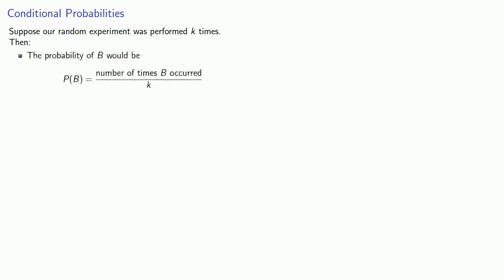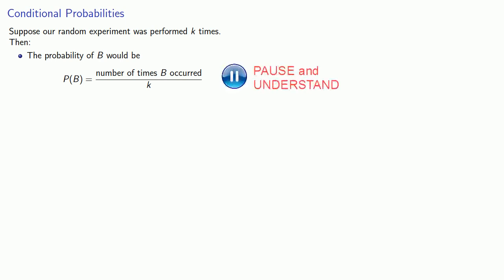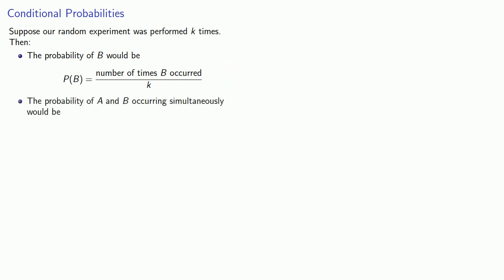So let's consider. Suppose our random experiment was performed k times. We'll do a little hand-waving and use our frequentist interpretation of probability. Then the probability of some event B would be the number of times B occurred over k. We could also find the probability of A and B occurring simultaneously, which would be the number of times both A and B occurred over k.